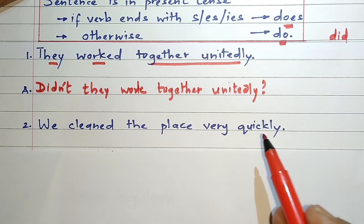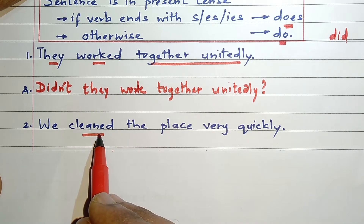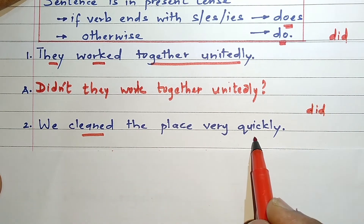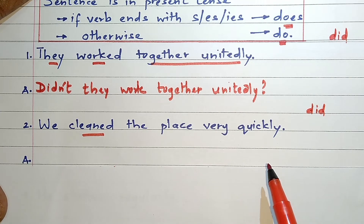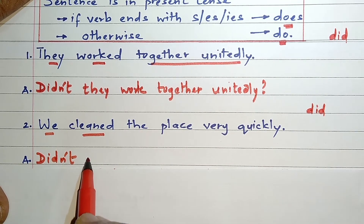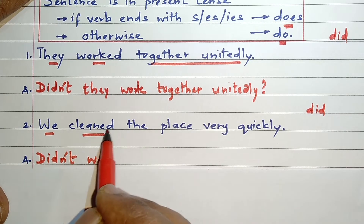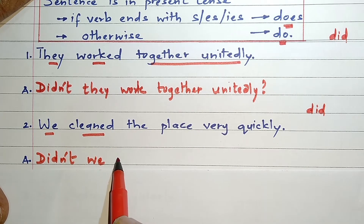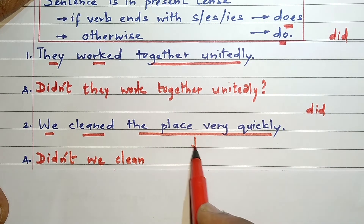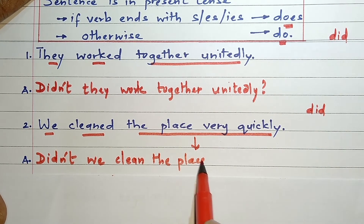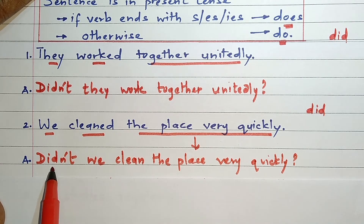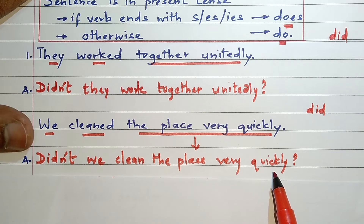'We cleaned the place very quickly.' 'Cleaned' is the verb and it is in past tense, which means the sentence is in past tense, so we will assume 'did'. The sentence is affirmative, so our interrogative answer will be negative — we write 'didn't', followed by the subject 'we'. We use the root verb of 'cleaned', that is 'clean' (C-L-E-A-N). We copy the remaining part: 'the place very quickly', followed by a question mark. Our interrogative answer is: Didn't we clean the place very quickly?